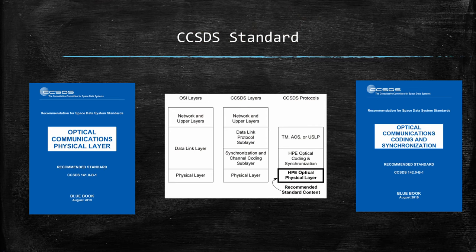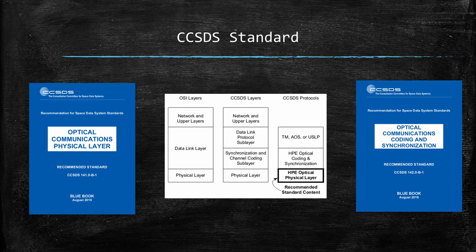Now let's take a look at the CCSDS standards, which are vital for ensuring consistency and interoperability in space data systems. The Consultative Committee for Space Data Systems — CCSDS — provides a set of guidelines for space communication to standardize data formats, interfaces, and operating procedures. The CCSDS standards cover various aspects of space data systems, with specific documents detailing standards for optical communications, broken down into the physical layer (CCSDS 141.0-B-1) and coding and synchronization outlined in CCSDS 142.0-B-1. These blue books are comprehensive guides that ensure different equipment and systems can communicate effectively with each other in space. The standards align with the OSI model of network layers, adapting it to the specific needs of space communication.